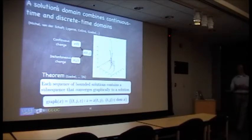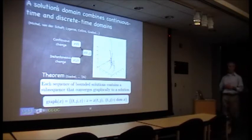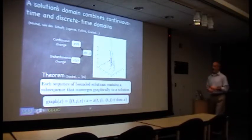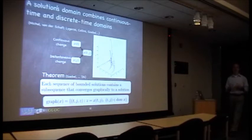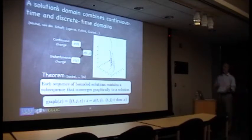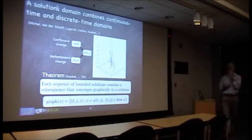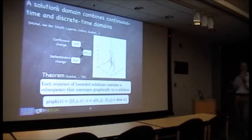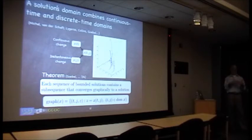It says that if you take a hybrid system and you look at a sequence of bounded solutions, that sequence has to have a subsequence that converges in some sense to another solution. This is very much related to robustness in the sense that you can also view this as looking at perturbed systems and comparing them to unperturbed solutions, having the property that all these perturbed solutions look close in some sense to an unperturbed one.